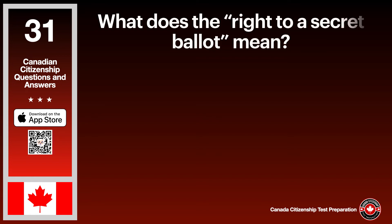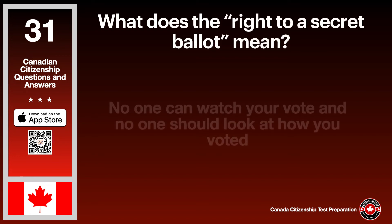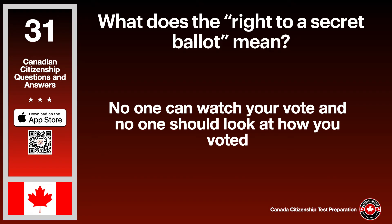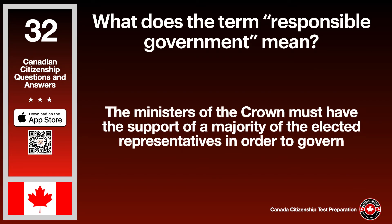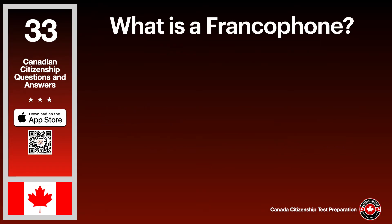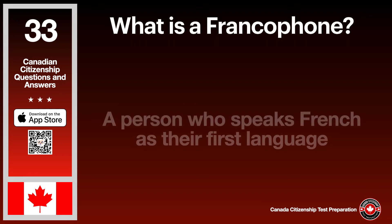What does the right to a secret ballot mean? The answer is no one can watch your vote and no one should look at how you voted. What does the term 'responsible government' mean? The answer is the ministers of the Crown must have the support of a majority of the elected representatives in order to govern. What is a francophone? The answer is a person who speaks French as their first language.